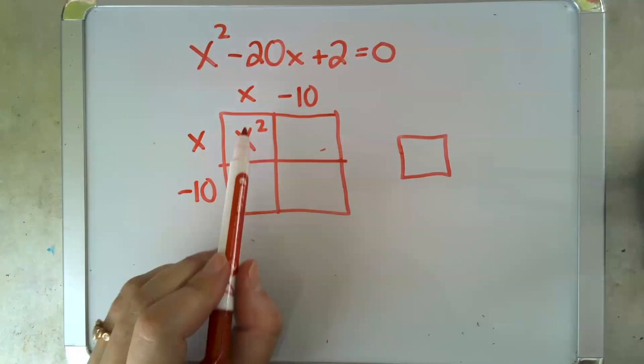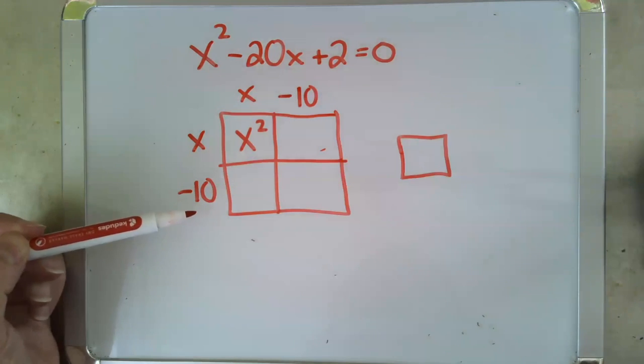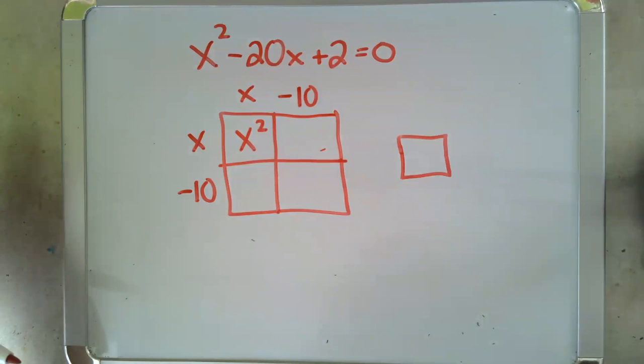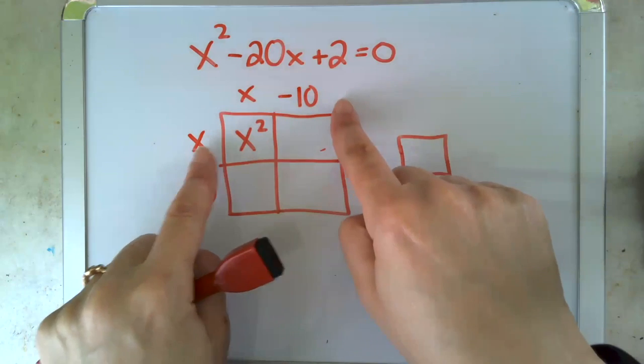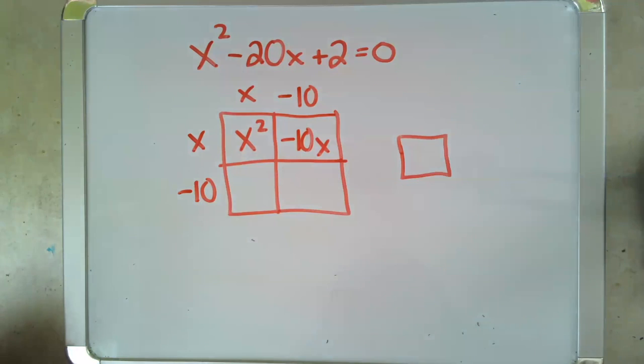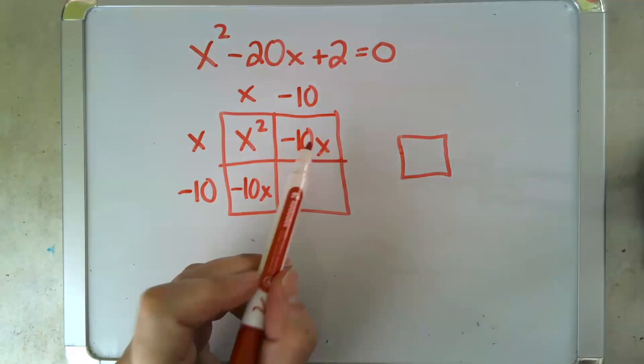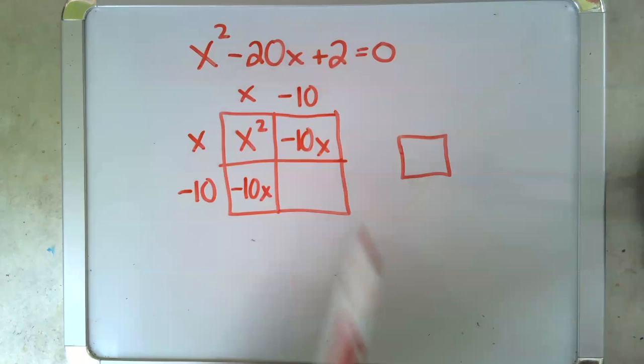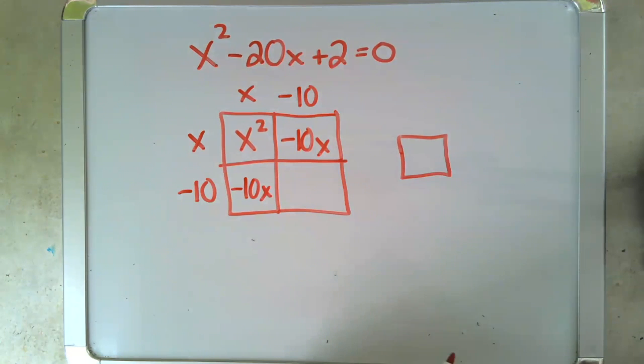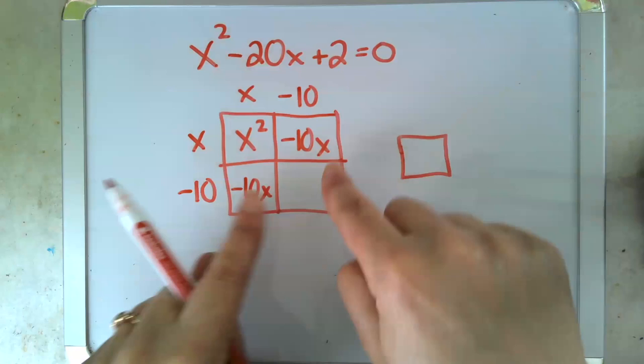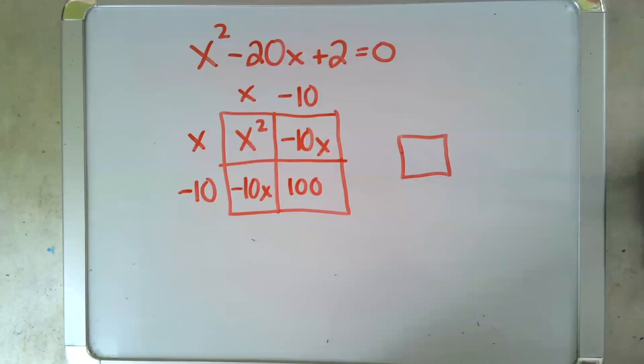That is our perfect square. x minus 10 times x minus 10. That's something times itself. When we finish filling in our array, x times minus 10, negative 10x. And again, negative 10 times x. And when we add those together, negative 10x and negative 10x, that's our negative 20x. So our last step is finish our array box. Negative 10 times negative 10. That's positive 100.